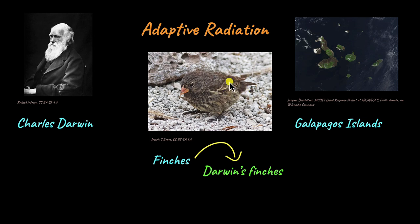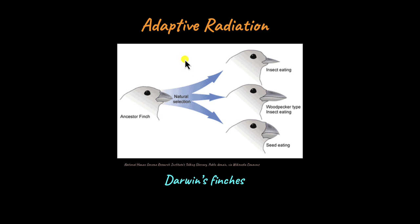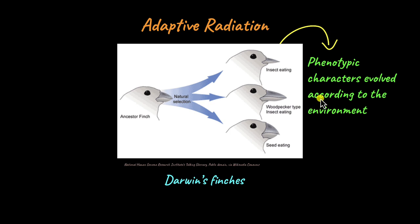But how exactly did they play a role in adaptive radiation? What Charles Darwin observed in the Galapagos Islands is that these finches seem to have evolved from a common ancestral finch and that they moved over, or became geographically isolated, at different parts of the island. Because the Galapagos Islands is an archipelago, each island is unique in terms of its environment. He noticed that the finches had evolved phenotypic characters according to the environment in which they evolved.